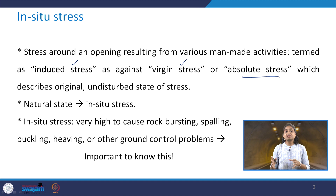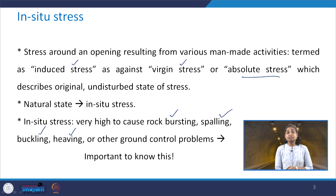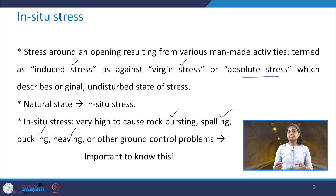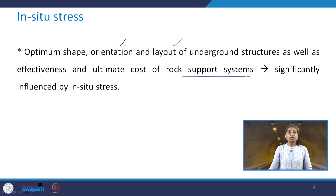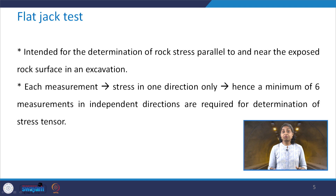The natural state of stress is what we call in situ stress. These stresses can be very high, causing rock bursting, spalling, buckling, heaving or other ground control problems. It is extremely important to know the in situ state of stress at any particular location in the rock mass. The optimum shape, orientation and layout of underground structures, as well as the effectiveness and ultimate cost of the rock support system, are all significantly influenced by the magnitude of in situ stresses.